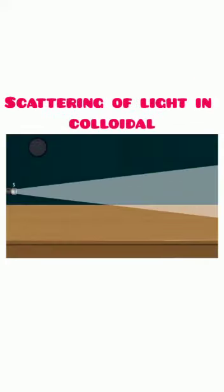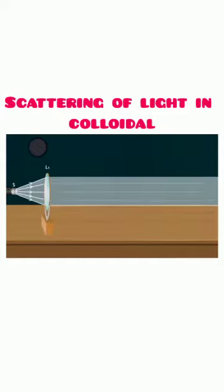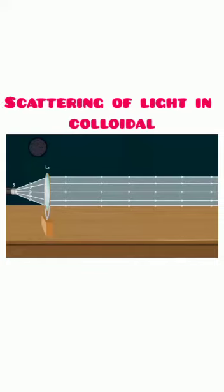Place a strong source S of white light at the focus of a converging lens L1. This lens provides a parallel beam of light. Allow the beam of light to pass through a transparent glass tank T containing clear water.